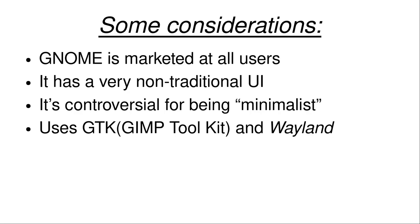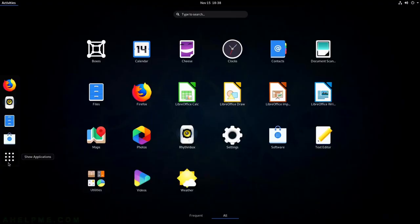GNOME being marketed at all users is an indication of its design decisions — it wants to be useful for professionals and for people who don't know how to use computers. It's a very non-traditional UI. It might look like a Mac with this application launcher, similar to macOS's launcher and dock. But that dock only shows up when you press the super key or go to the activities page.